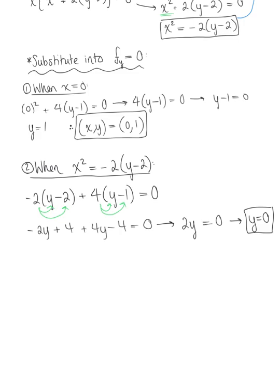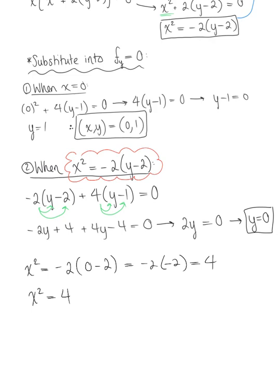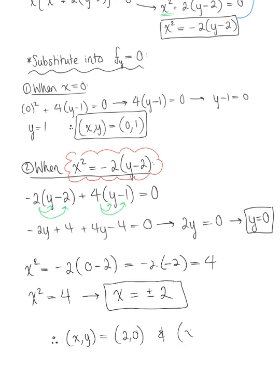Plugging y equals 0 back into x squared equals negative 2 times (y minus 2), we get x squared equals negative 2 times (0 minus 2), which is negative 2 times negative 2, giving x squared equals 4. Taking the square root of both sides, x equals plus or minus 2. So we have two potential critical points: (2, 0) and (−2, 0).